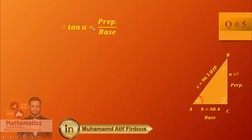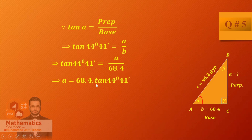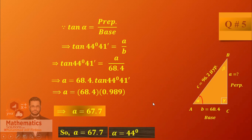You can also use sine or tangent for perpendicular and hypotenuse. The base and hypotenuse can use cosine. Find side A: cross multiply with B equals 68.4, simplify, and get your answer. So the final answers are: side A, angle alpha, and angle beta.